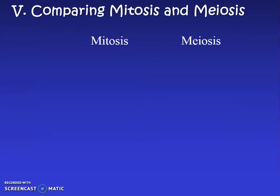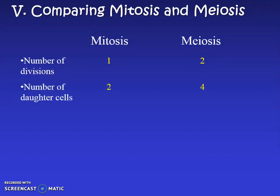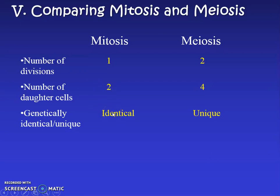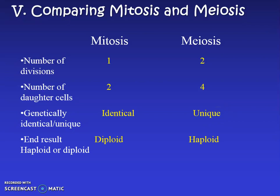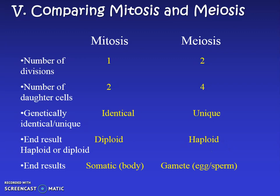Remember, these are all gametes — we were forming four sperm or four eggs, which are sex cells. To compare mitosis and meiosis: mitosis has one division, meiosis has two; mitosis produces two daughter cells, meiosis produces four; mitosis results are genetically identical diploid body cells like skin cells, while meiosis results are genetically unique haploid gametes like egg and sperm. Great job going through the details!